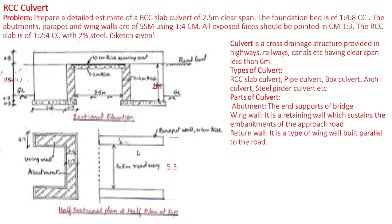Let us understand more about the parts of a culvert. Looking at the sketch, the abutments are the end supports of the bridge. For a slab culvert, there are two abutments. The deck slab rests on the abutment at road level. The width of the abutment is 0.4 meters and the width of the drain below is 2.5 meters.